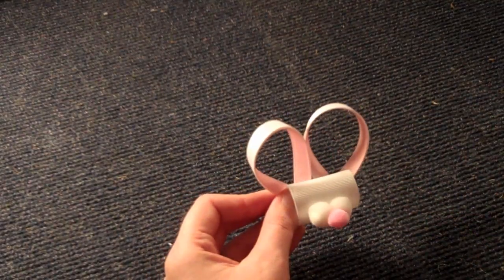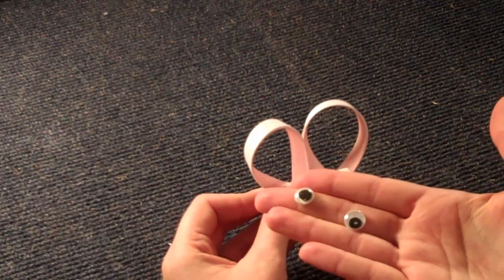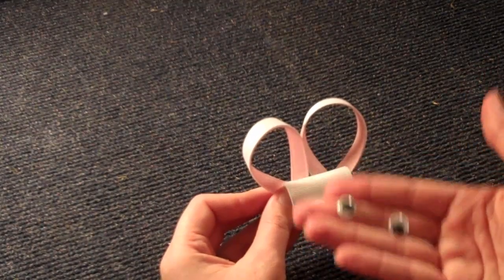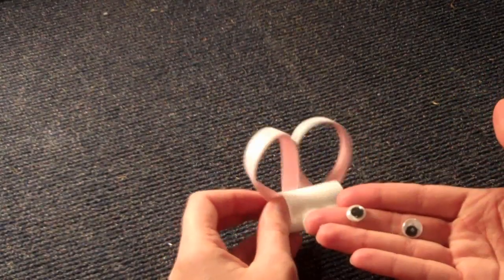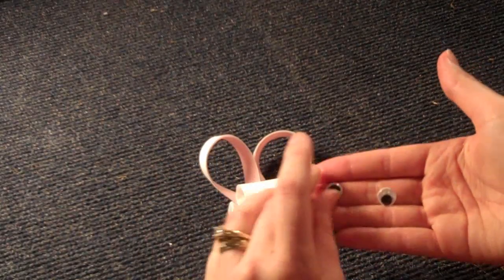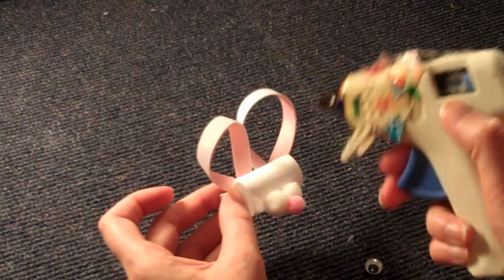I think he's ready for his eyes. Now I'm going to be using a couple of googly eyes. You can get these in the craft section of Walmart. You don't have to use the googly eyes. You can draw your eyes on or whatever, but I just find that these work. They're easier.